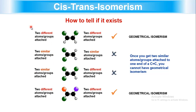To determine whether a molecule shows geometric isomerism: if two different groups are attached on each carbon of the double bond, it will show geometric isomers. If two similar groups are on one carbon and two similar groups on the other, it will NOT show geometric isomerism. If one carbon has two identical atoms and the other has two different atoms, it also will NOT show geometric isomerism. Only when both carbons of the double bond each carry two different atoms will the molecule show geometric isomerism.